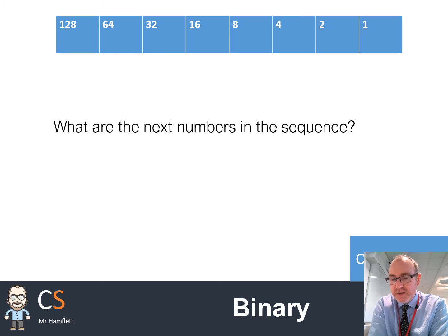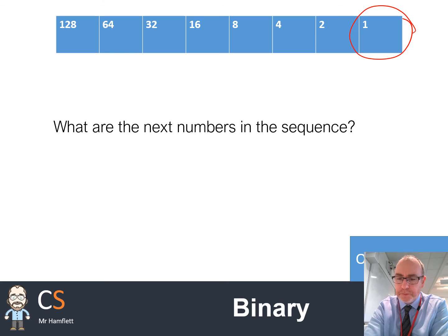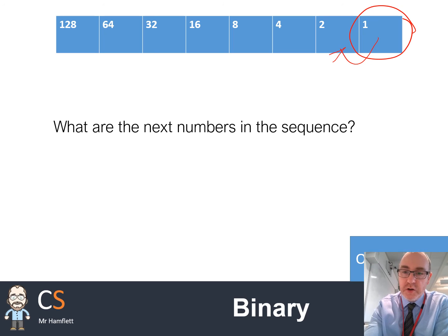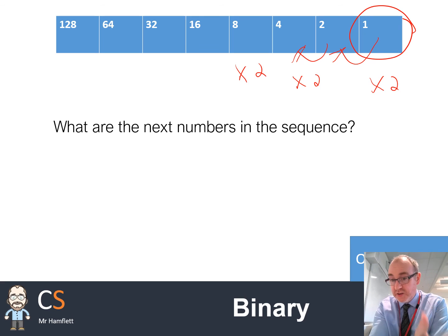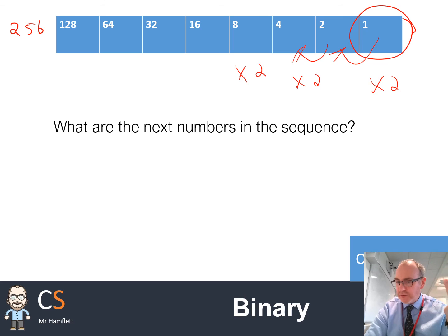The last thing to revise is binary. Looking at these numbers — notice that we have 1 on the right-hand side. Hopefully you can see a pattern: these numbers are doubling. Going from 1, times 2 gives 2, times 2 gives 4, times 2 gives 8, and so on. Each number doubles every time. So what's the next number after 128? It's 256. If you kept going, it would be 512, then 1024, and so on.